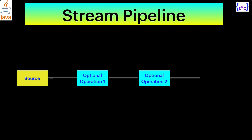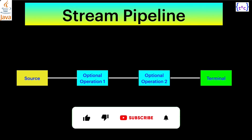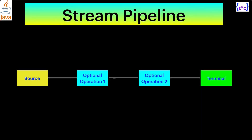Now let's talk about how a stream works. Streams work in a pipeline: there will be a source from where the sequence of elements will be taken, a stream will be created on the source, and then that stream will be followed by certain operations you need to perform, and then followed by a terminal operation. The intermediate operations — the light blue boxes shown — are all optional, meaning a stream can go directly from source to terminal operation.